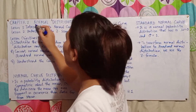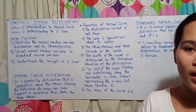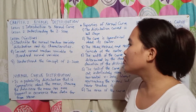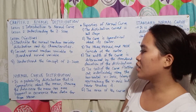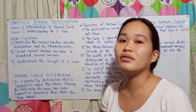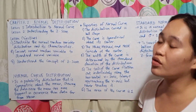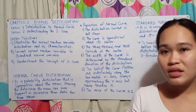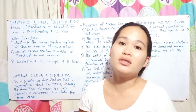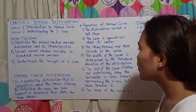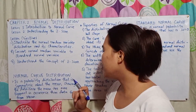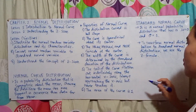When we say normal distribution, it falls under inferential statistics and is a continuous type. The normal curve distribution is a probability distribution that is symmetric about the mean, showing that data near the mean are more frequent in occurrence than data far from the mean. The normal curve distribution is also known as the Z-distribution, Z-scores, or the Z-test.